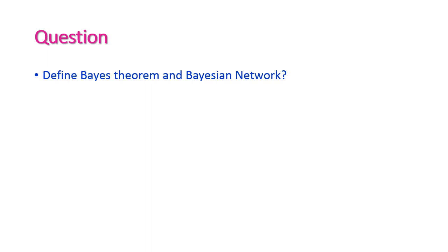In this video we have seen the Bayes theorem with the meningitis and stiff neck example, and then Bayesian networks with the burglar alarm example. Now for question time: define Bayes theorem and Bayesian network. Please give your answers in the comment box and we will see you in the next video with a new topic. Thank you all.